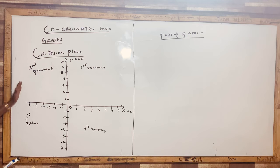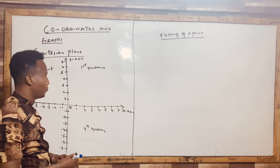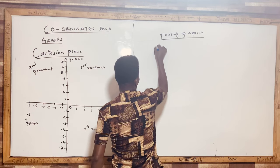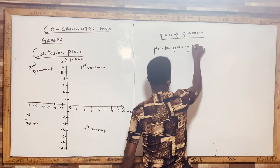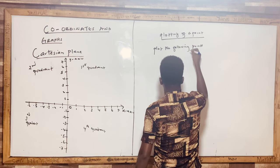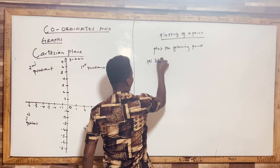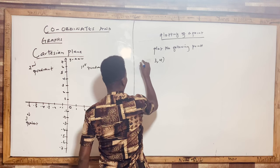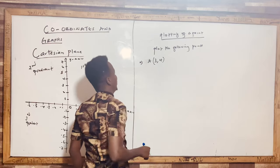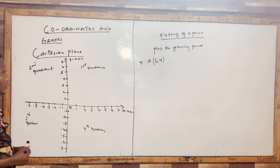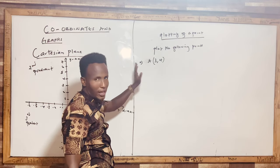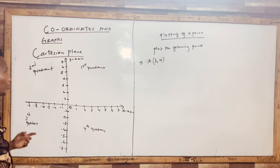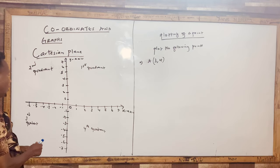This is the Cartesian plane. Assume you are told to plot the following points. Point A is (3, 4). If I want to plot this point, I go to where x is 3 on the horizontal axis — x is positive, so I go to the right side — then y is 4, which is positive, so I move upward.